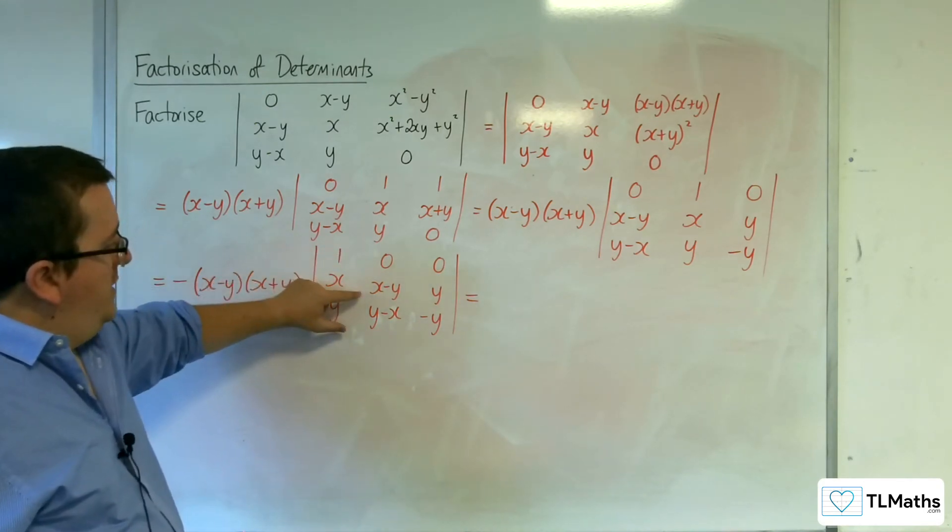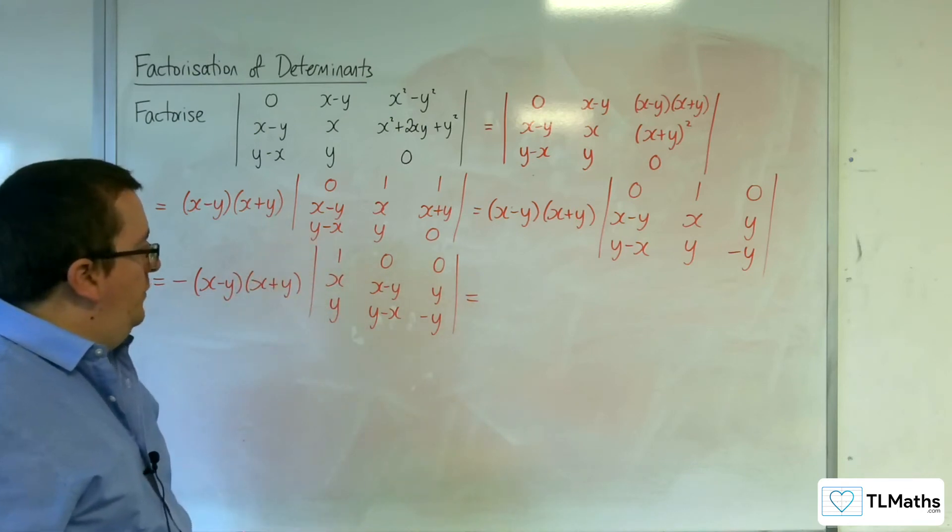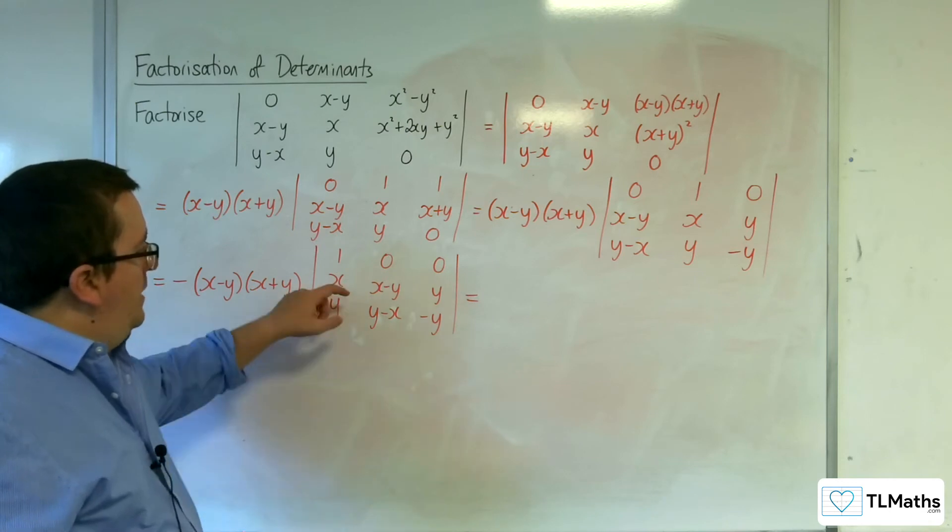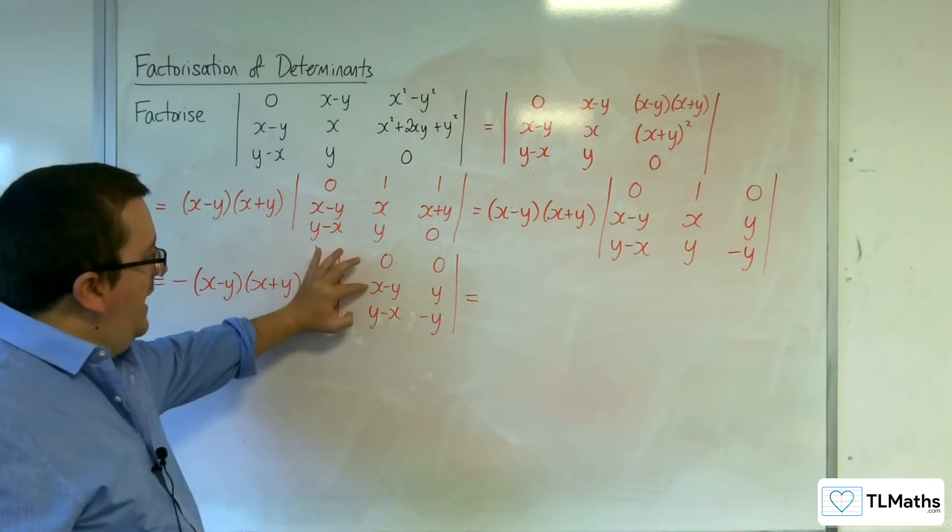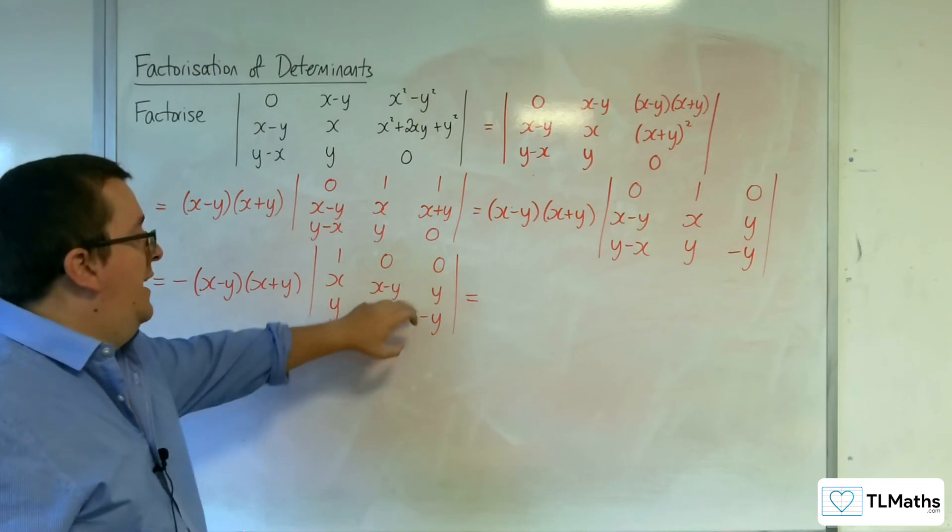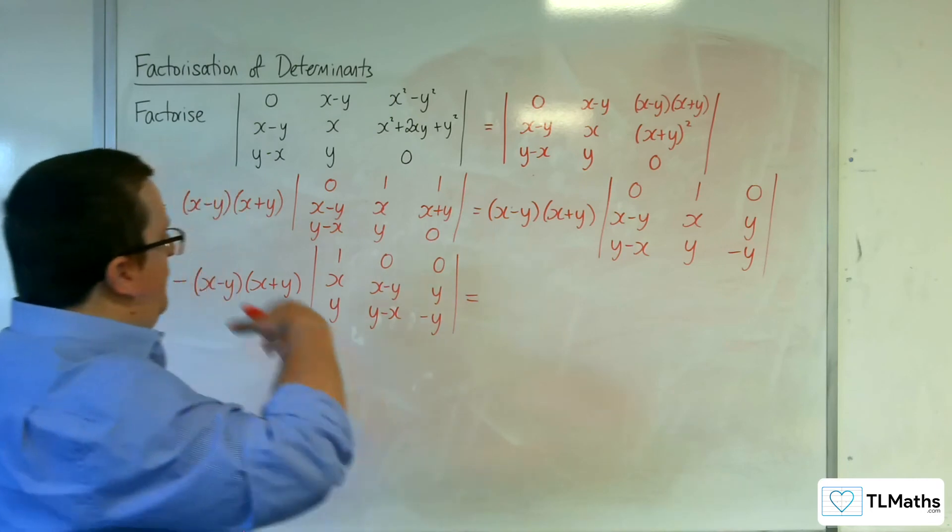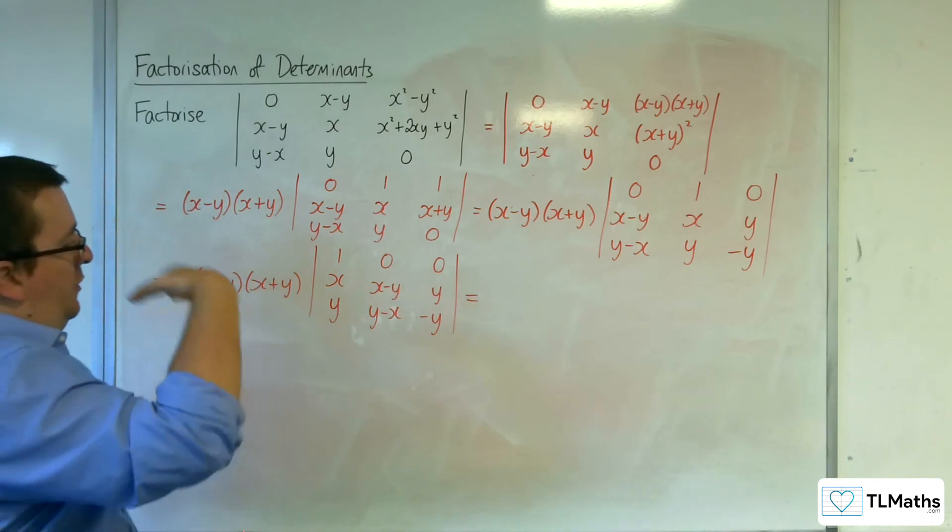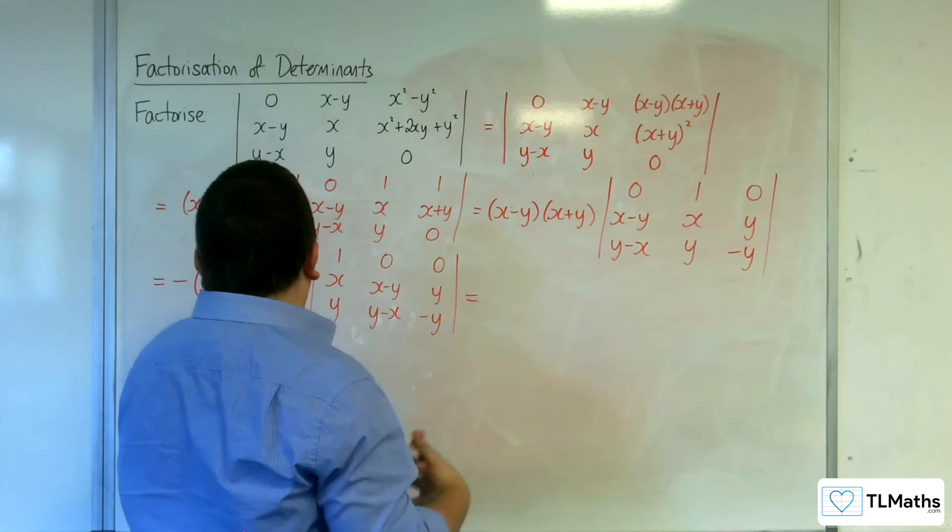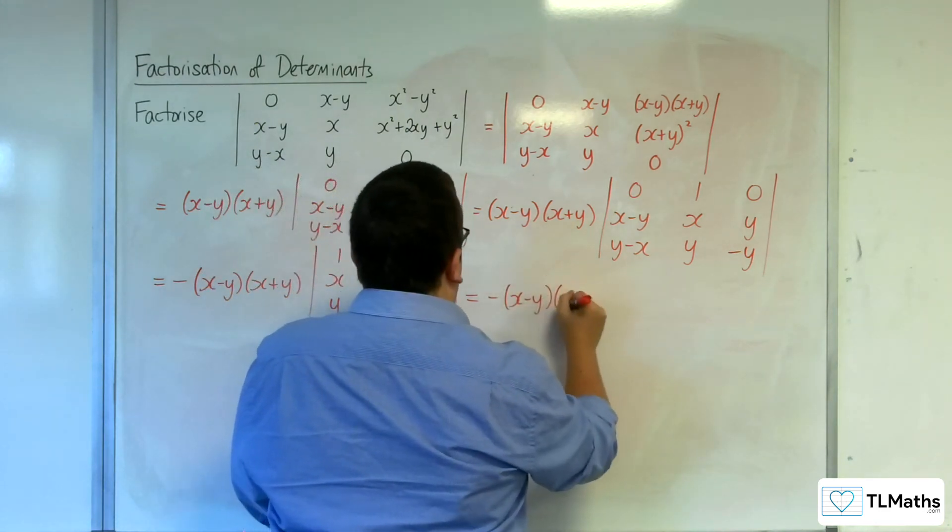Now, you might notice now that if I add together these two rows, I'm going to get an (x+y). I'm going to get x take away y plus y take away x, so they're going to cancel each other out. And I'm going to have the y take away y, which are going to cancel each other out. So if I do row 2 plus row 3, the new row 2 is row 2 plus row 3.